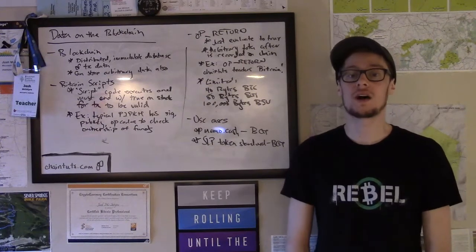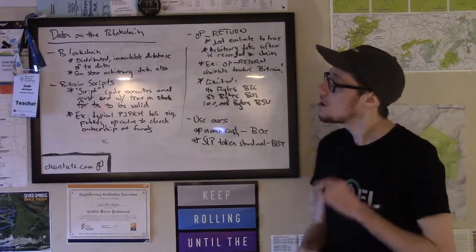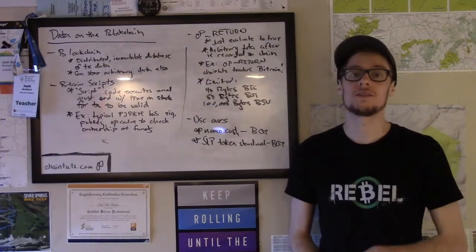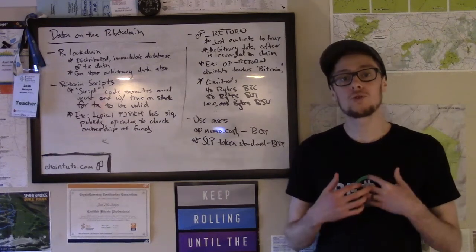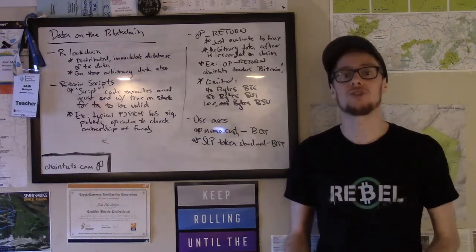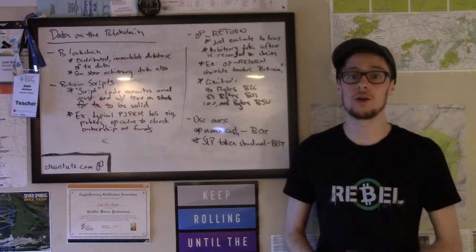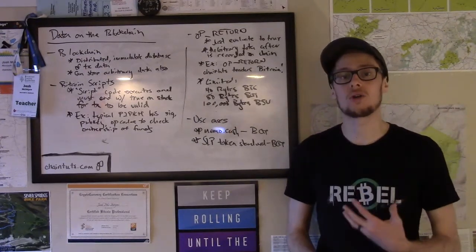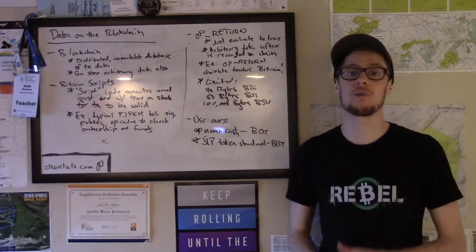So we're going to talk about the different components that go into this and allow this to happen. The first thing we need to understand is the concept of Bitcoin scripts. When you create a transaction to send funds to somebody else on Bitcoin or a fork of Bitcoin, there's not simply a hard-coded set of rules or steps that the Bitcoin protocol follows to ensure that that transaction is valid.